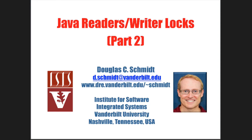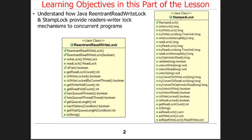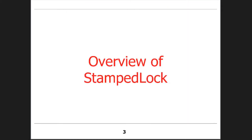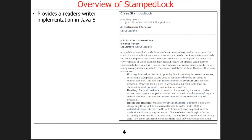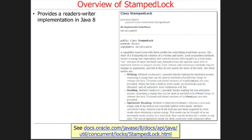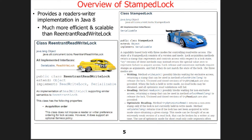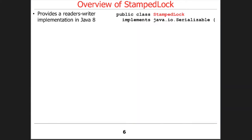Now that we've talked about what reader-writer locks are in general, we'll zoom in and talk about StampedLock. This is a reader-writer implementation that came out in Java 8, really intended to fix the problems with the earlier versions. It's way, way more efficient and scalable than ReadWriteLock. It does have a couple of tiny limitations — in particular, it's not reentrant — but other than that, it's just really cool.